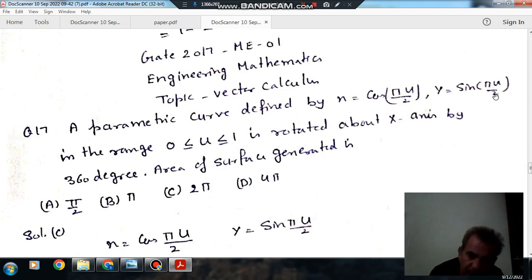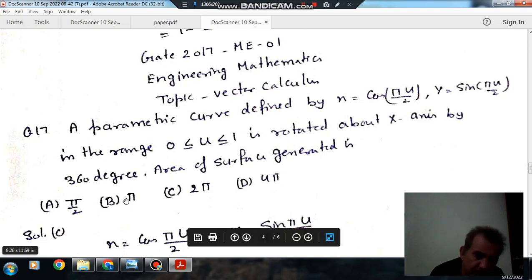...= sin(πu/2) in the range 0 to 1 for u, is rotated about the x-axis. The area of the surface generated is: option A π/2, option B π...